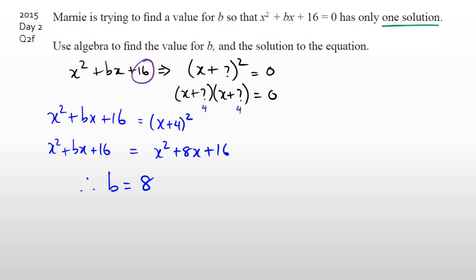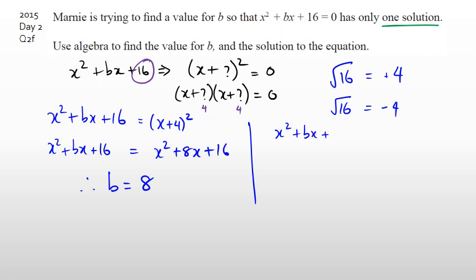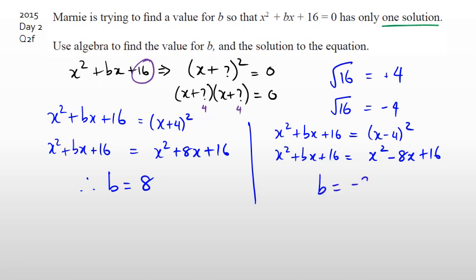But there's one more thing: when you take the square root of 16, it's not only positive 4 — it can also be negative 4, since two negatives multiply to a positive. So X squared plus BX plus 16 could also equal (X minus 4) squared. Expanding that gives X squared minus 8X plus 16, so B is also equal to minus 8. B actually has two answers: 8 or negative 8.